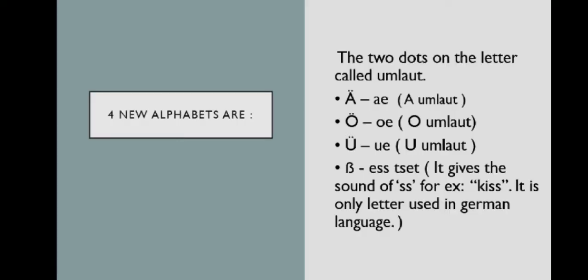We have learned the pronunciation of A to Z alphabets. Now we will be learning the four new alphabets and their pronunciation in German. So the first alphabet is E umlaut and the pronunciation of this alphabet is Ye.